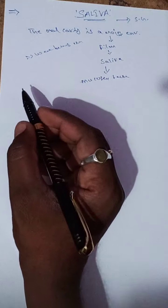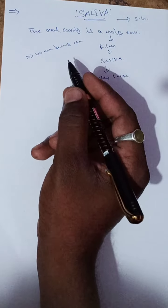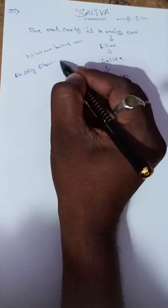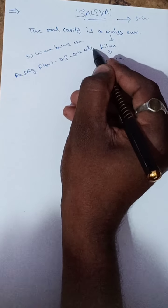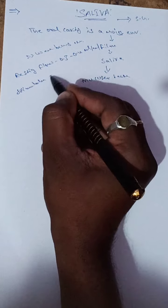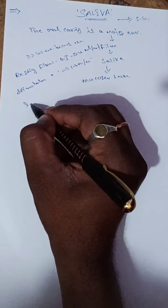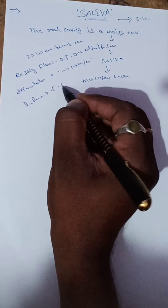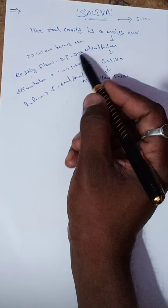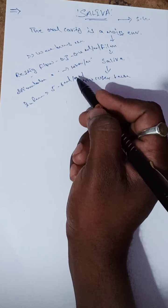What is the normal range of saliva? Saliva is secreted from the salivary glands. The resting flow rate is 0.3 to 0.4 ml per minute. The stimulated flow rate is 1 to 2 ml per minute. In infants, it is 5 to 6 ml per minute.